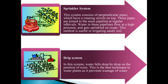In the sprinkler system, water is supplied using a pipe-like structure. Water flows through the pipe at high pressure and gets sprinkled on the crops. This method is useful for irrigating sandy soil. In drip irrigation, water falls drop by drop directly at the position of the roots.